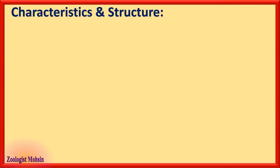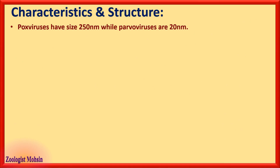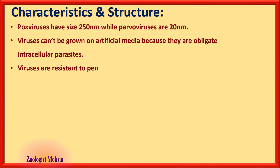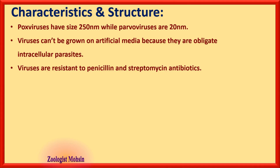Pox viruses have a size of 250 nanometers while parvo viruses are 20 nanometers in size. Viruses cannot be grown on artificial media because they are obligate intracellular parasites — they only live inside cells and use cellular machinery to replicate, unlike bacteria grown in colonies on agar. Viruses are resistant to penicillin and streptomycin antibiotics because antibiotics work against bacteria, not viruses.